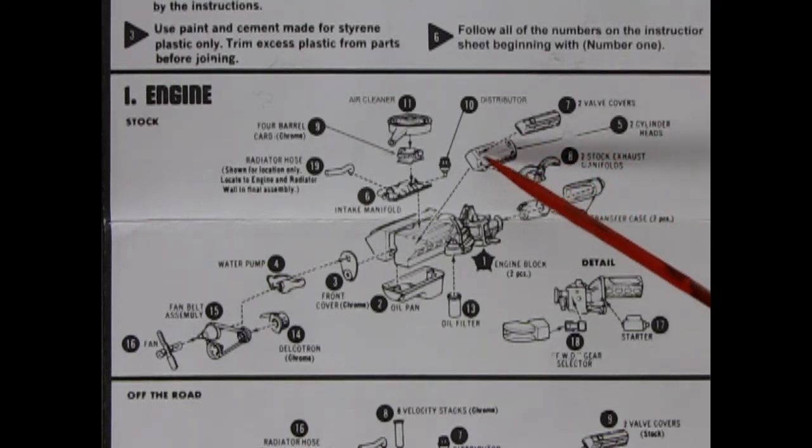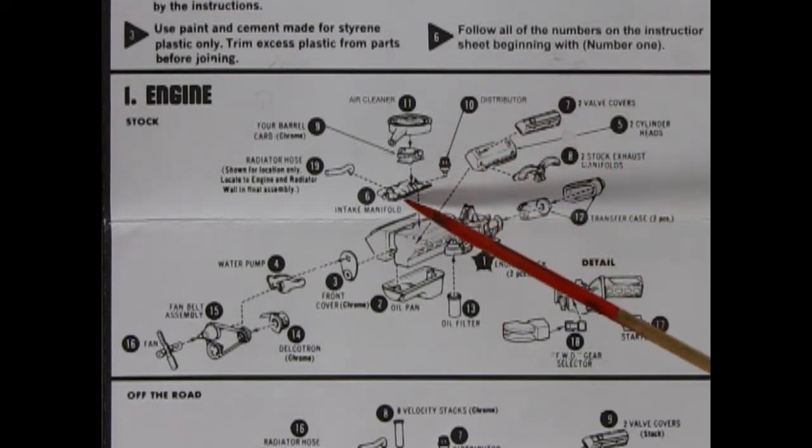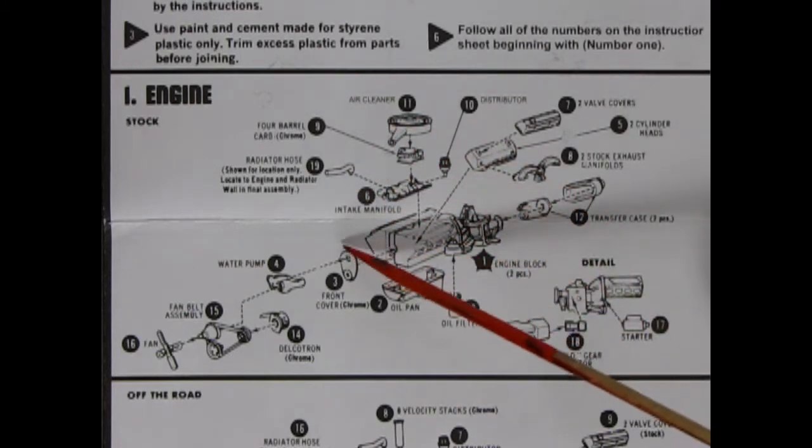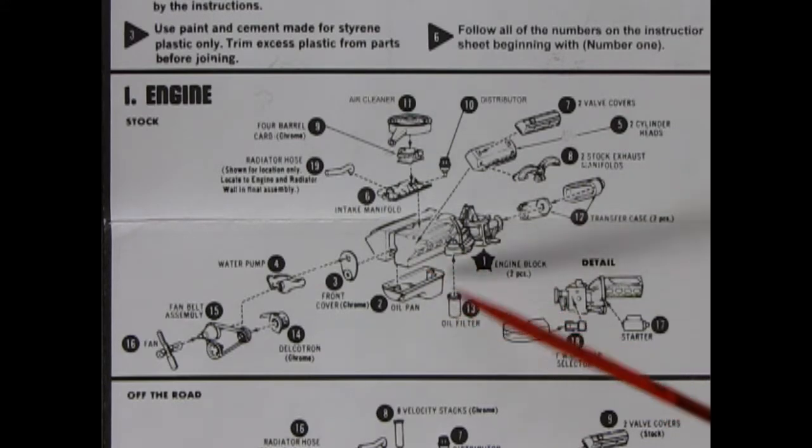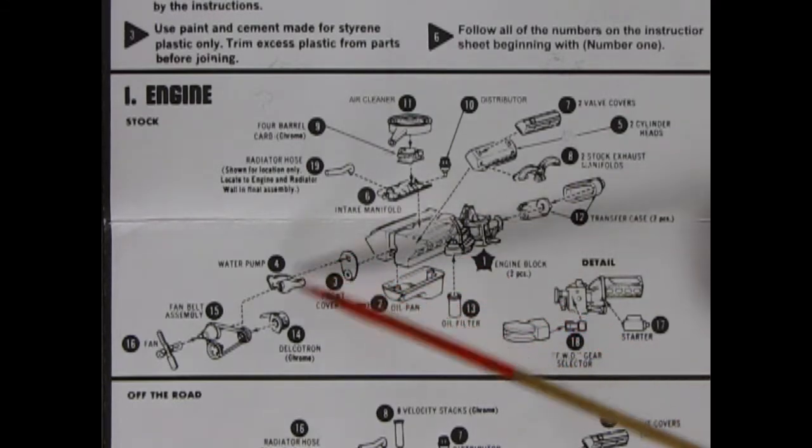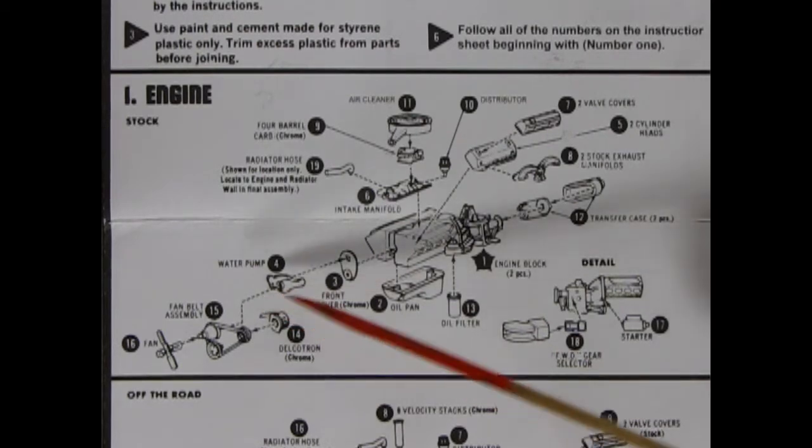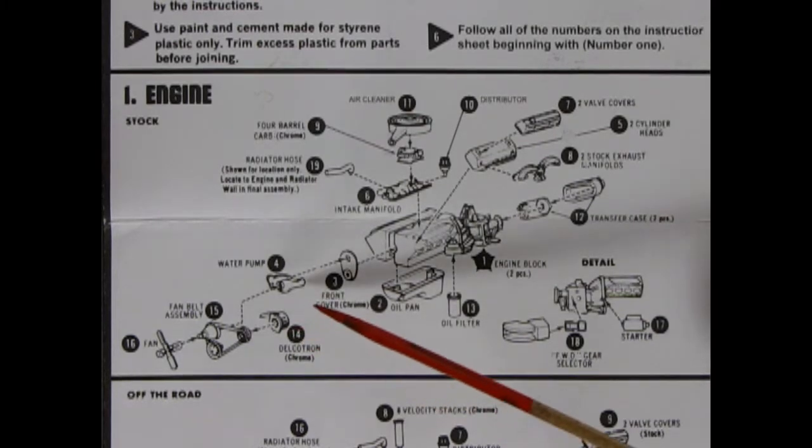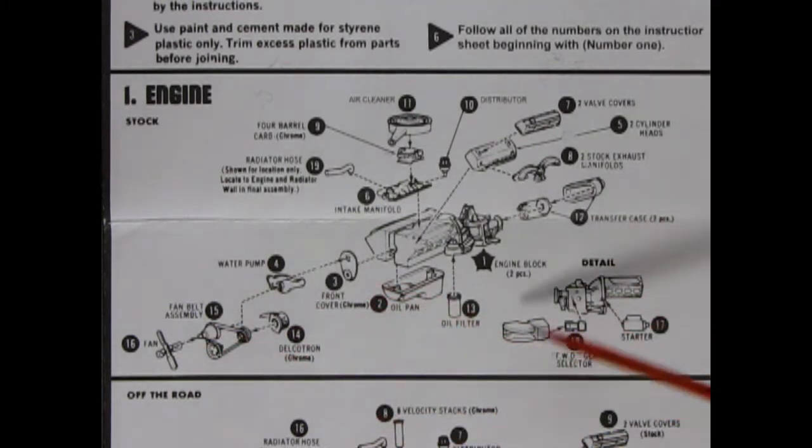There's the exhaust manifold. And this does look like the 327 Chevy, sort of like the Corvette style manifolds of the 60s. There we've got our cylinder head covers, our valve covers, distributor at the back, the manifold, the carburetor, the air cleaner, upper radiator hose, front cover for timing chain, oil pan is separate, oil filter is up. We've got the water pump up here, our Delcrotron. Never heard an alternator called a Delcrotron before. There's our fan belt assembly and our fan. Then we've got a two-gear selector here going off the side of the transmission, and our starter motor off the side.